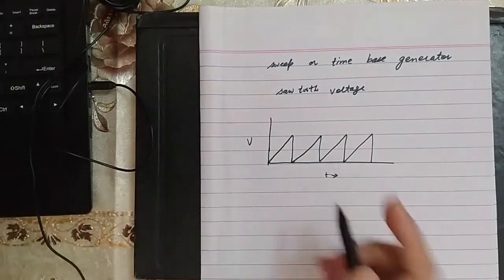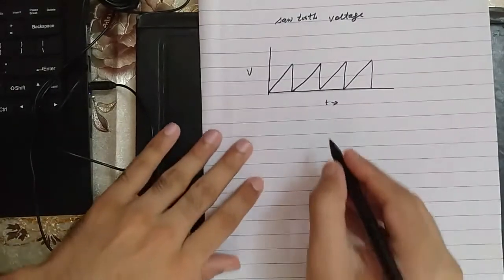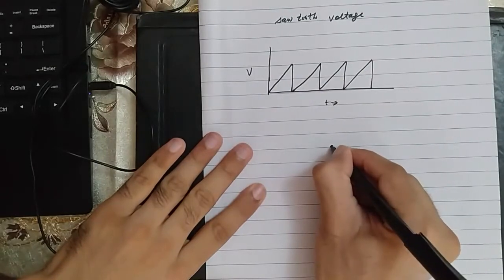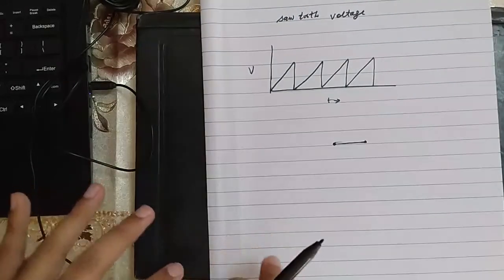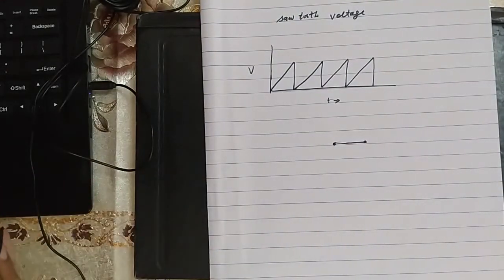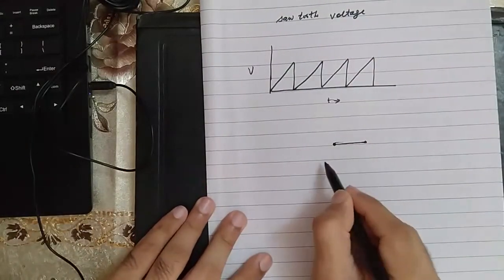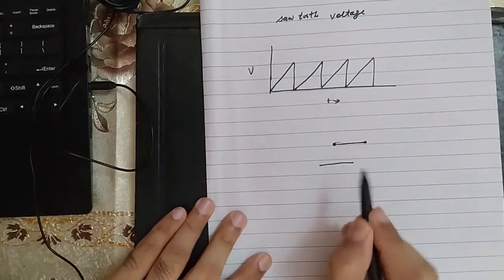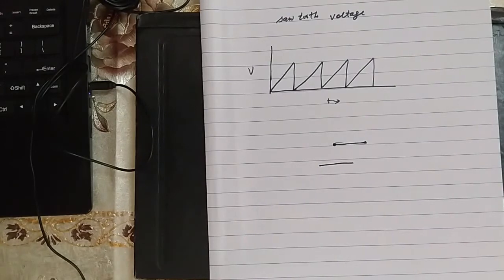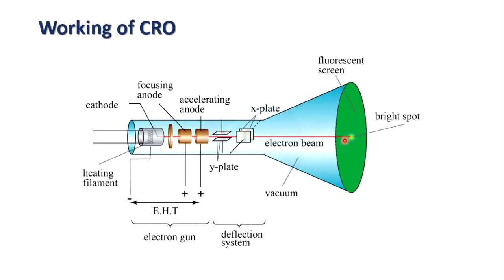When the saw-tooth voltage is not applied, you see a single dot on the screen. When we apply it, you will see only a single line — you wouldn't be able to see the dot moving across the x-axis. Instead, you will see only a single line.